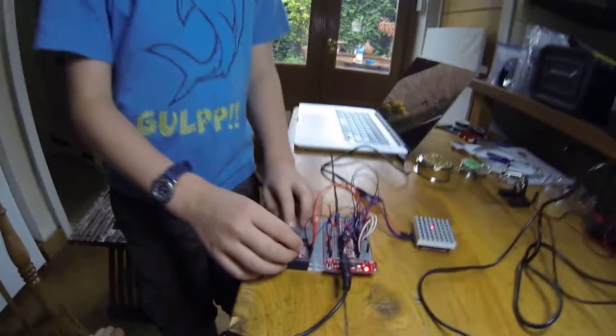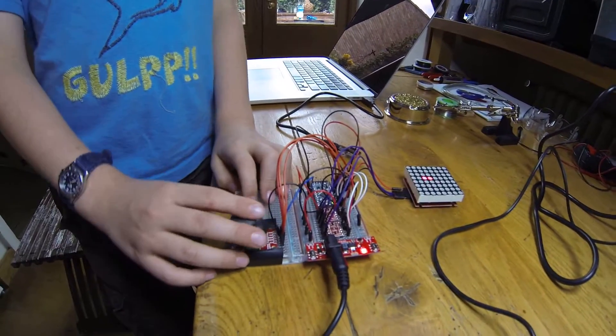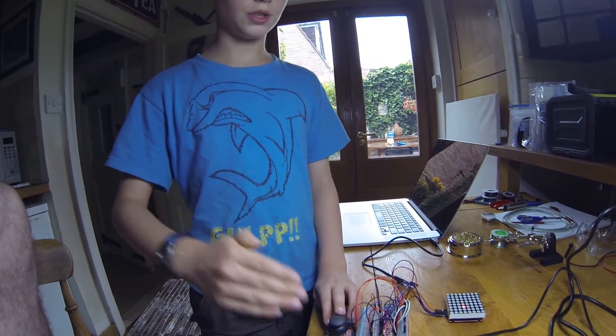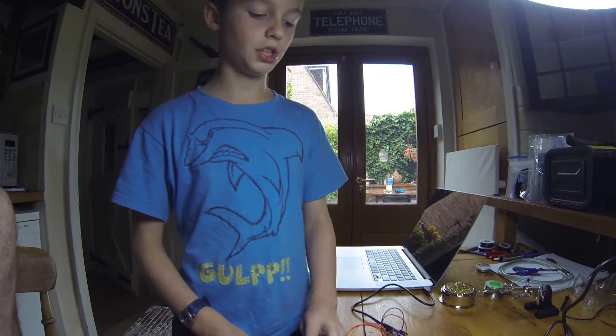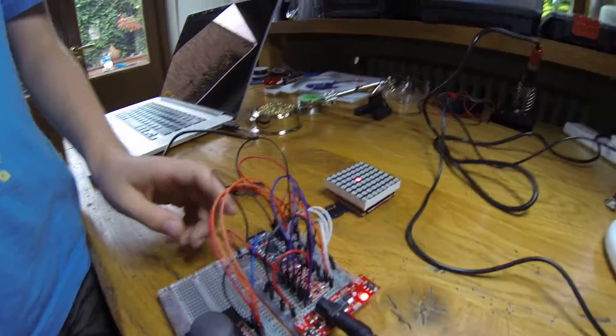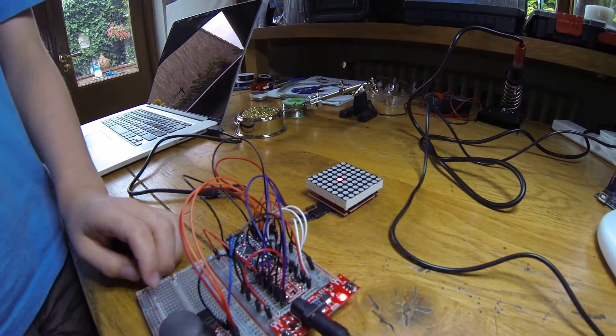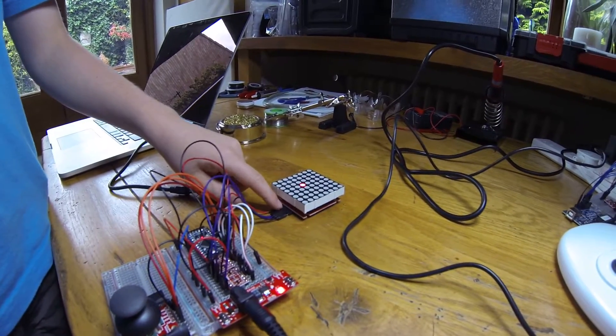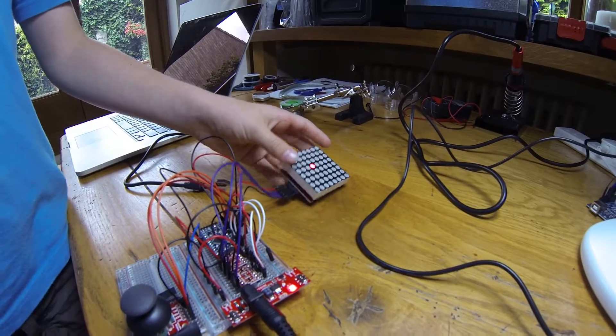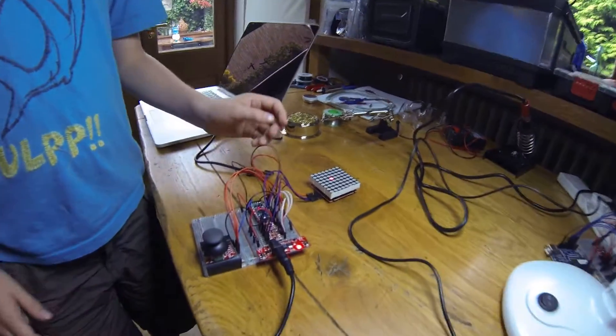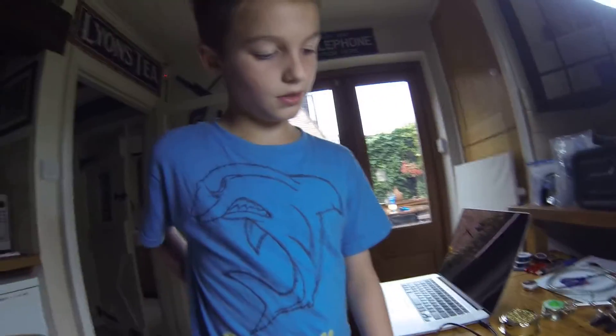When you move the switch there's a resistor and the resistor moves depending on where the switch is, giving you a different voltage which is transferred to the microcontroller and is changed into digital information which is then sent into the LED matrix.